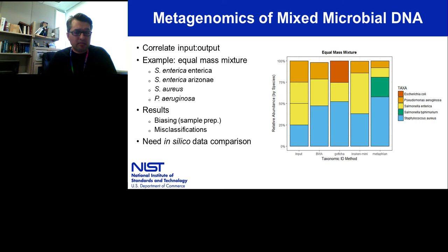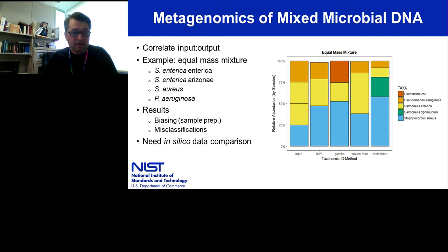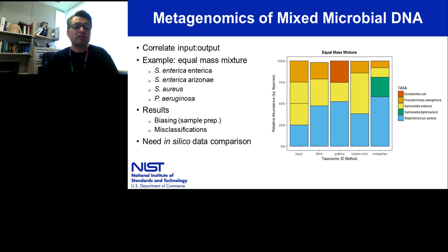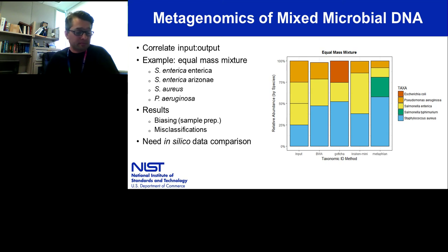Moving to one of the metagenomic mixtures we produced: this was an equi-mass mixture containing two strains of Salmonella, Staph aureus, and Pseudomonas aeruginosa. On the graph, what you see on the left is what we input into the system, and then the results from taxonomic classification using the same dataset from four different tools. What we think we see is that there's certainly bias happening in this analysis, probably due to some sample prep, and there are also some misclassifications. Most of the tools did a pretty good job of identifying the different species and strains present. GOTTCHA seemed to have a little problem identifying the Pseudomonas, and the abundances differ fairly significantly — but this underscores the point that we know biases exist and we're now able to objectively track these differences.